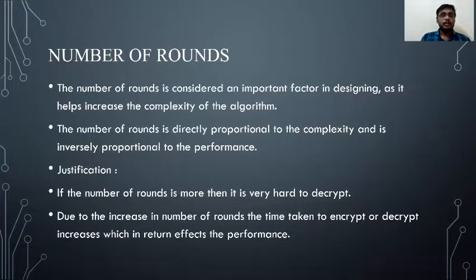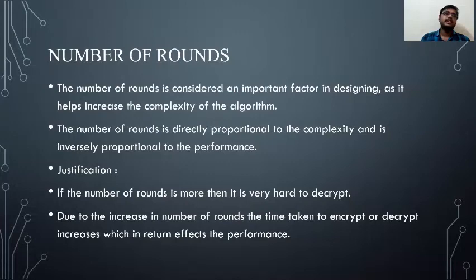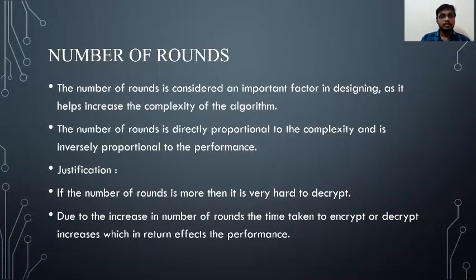Number of rounds is an important factor in designing block ciphers, as it helps increase the complexity of the algorithm. The number of rounds is directly proportional to complexity and inversely proportional to performance. Common round counts used are 12, 16, and 20 rounds. As you increase the number of rounds, the time taken increases, so performance decreases. At the same time, as rounds increase, the complexity level also increases, making it harder for an attacker to decrypt the algorithm.